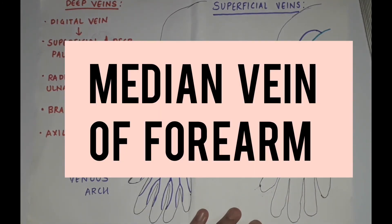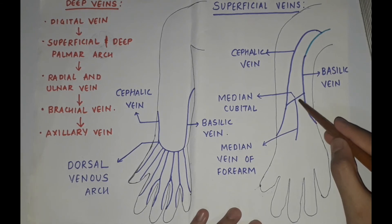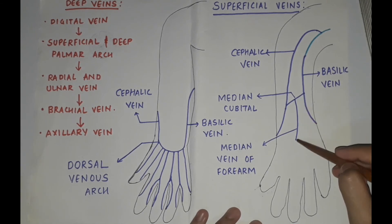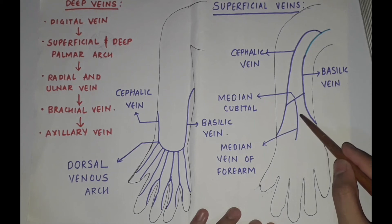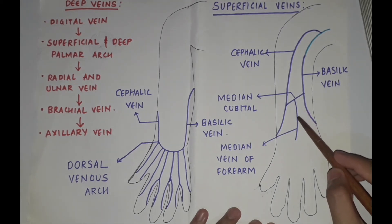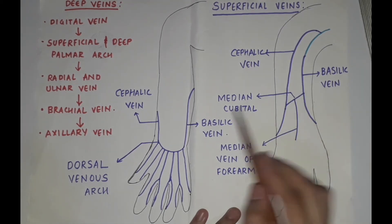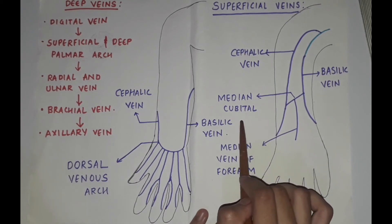Median vein of the forearm. It begins from the palmar venous network and ends in any one of the veins in front of the elbow, mostly into the median cubital vein.